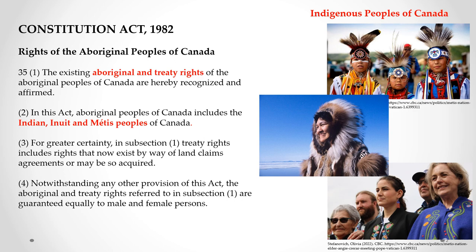Indian is more appropriately referred to today as First Nations. First Nations peoples are those who occupied the land south of the Arctic before the arrival of the Europeans. Inuit peoples are those who occupied the Arctic, and the Métis are people of mixed Indigenous and French ancestry who developed distinct customs and cultures.